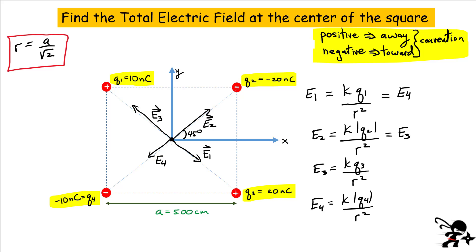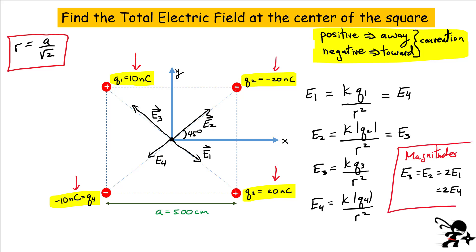Some of these are equal to each other. Since the magnitude of Q1 equals the magnitude of Q4, we can say that E1 equals E4. Also, looking at Q2 and Q3 — they have the same magnitude, so E2 equals E3. Furthermore, since Q2 and Q3 are 20 nanocoulombs while Q1 and Q4 are 10 nanocoulombs, the magnitude of E3 equals the magnitude of E2 equals two times E1, which equals two times E4. Here I'm only talking about the magnitudes of those vectors, not the direction — I've already taken direction into consideration when I plotted the vectors.